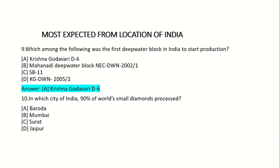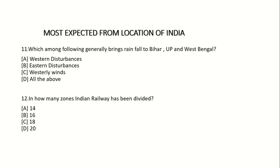10th question: In which city of India are 90% of the world's small diamonds processed? Option A: Baroda. Option B: Mumbai. Option C: Surat. Option D: Jaipur. Answer: Option C — Surat.